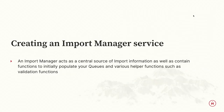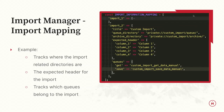Then we make an import manager service. You can use this service as a central source of your information. It can contain all your functions to populate your queues, helper functions, validation functions — a one-stop shop for everything you need. For example, we can have some import mapping. I'll sometimes have a queue directory where files sit, and as I process them I move them to an archive directory. We define expected headers for validation and also define our queues.